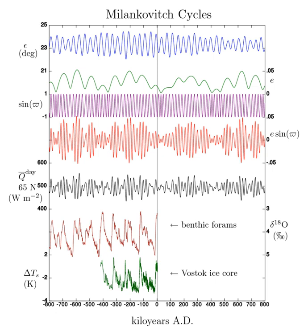Eccentricity varies primarily due to the gravitational pull of Jupiter and Saturn. However, the semi-major axis of the orbital ellipse remains unchanged. According to perturbation theory, which computes the evolution of the orbit, the semi-major axis is invariant. The orbital period is also invariant, because according to Kepler's third law, it is determined by the semi-major axis.